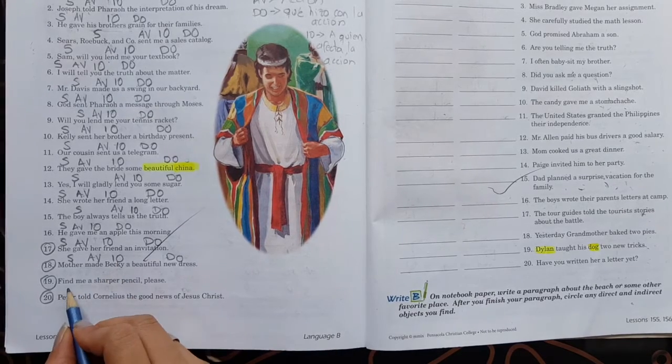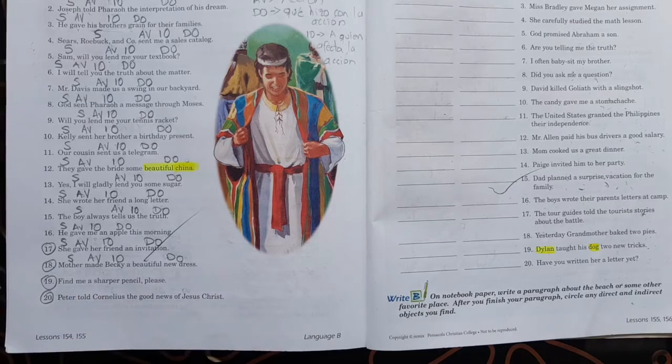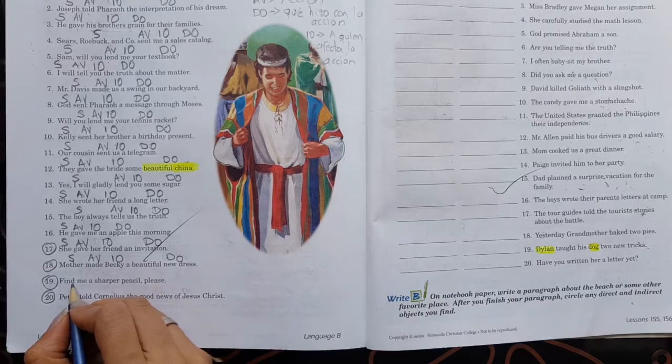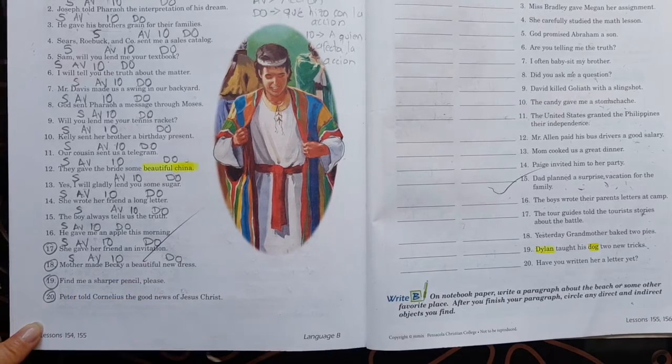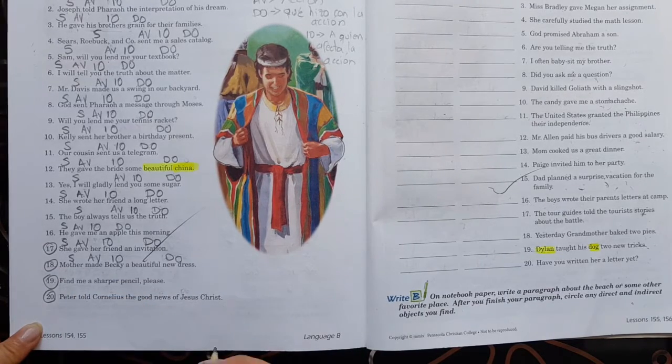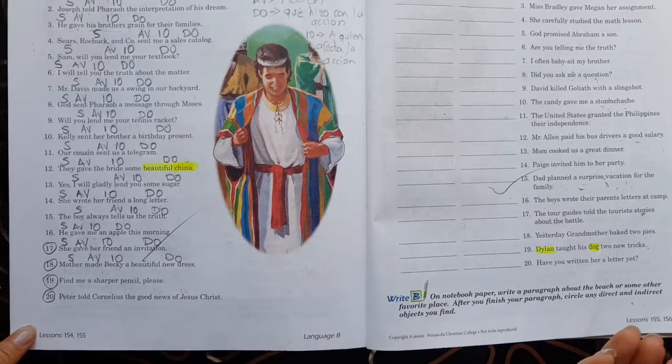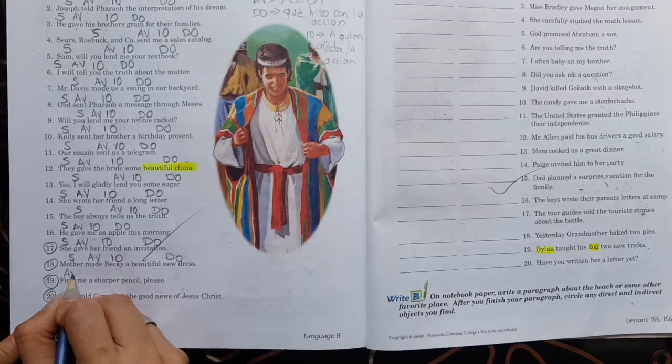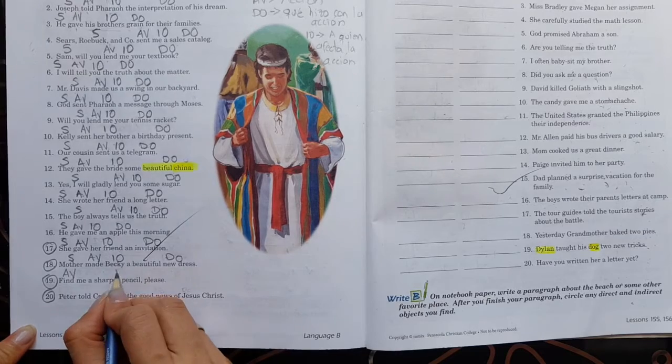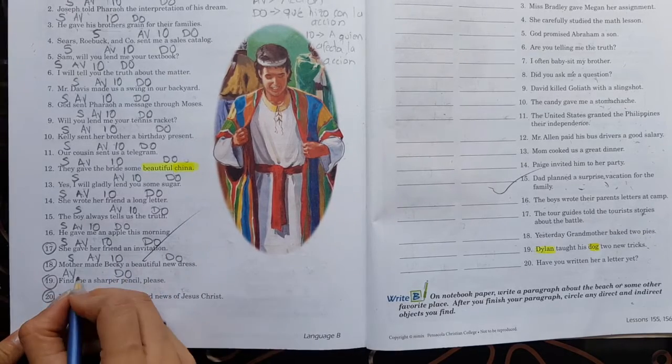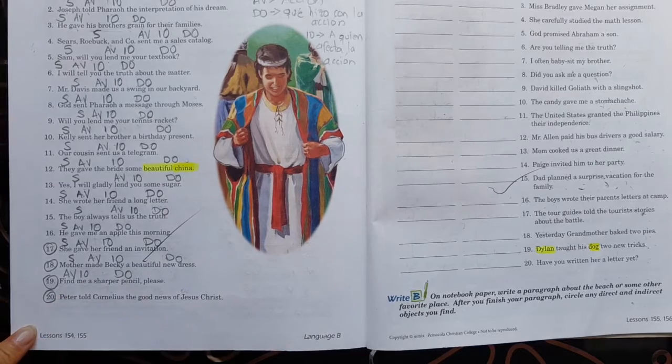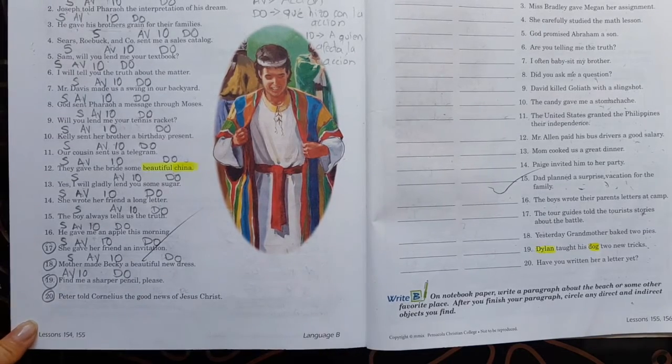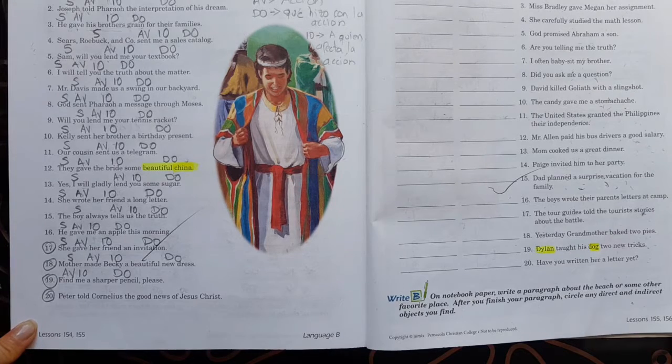Bien. Entonces, sería. ¿Ella? ¿Qué hizo? Dio. Ese es el action verb. ¿Qué dio? Una invitación. ¿Y a quién se la dio? A su amiga. Acá. La mamá le hizo a Becky un hermoso vestido verde. Entonces, mamá, ¿qué hizo? Un vestido nuevo. ¿Y a quién se lo hizo? A Becky. Siguiente. Encuéntrame un lápiz resaltador, por favor.